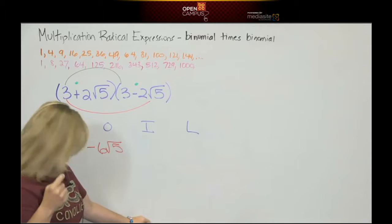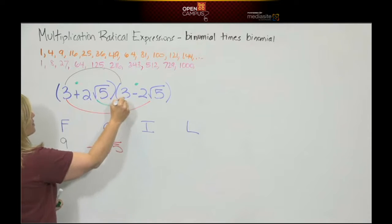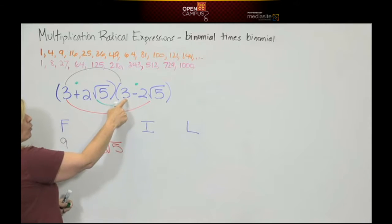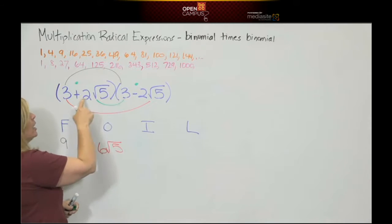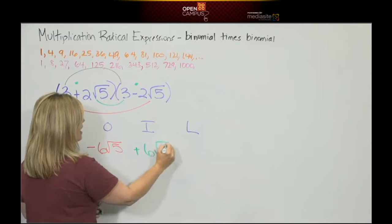The inside is his nose. Positive 2 square roots of 5 times 3. Again, that 2 is positive, it's on the outside. That 3 is positive, it's on the outside. Positive 2 times positive 3 is positive 6, and square root of 5.